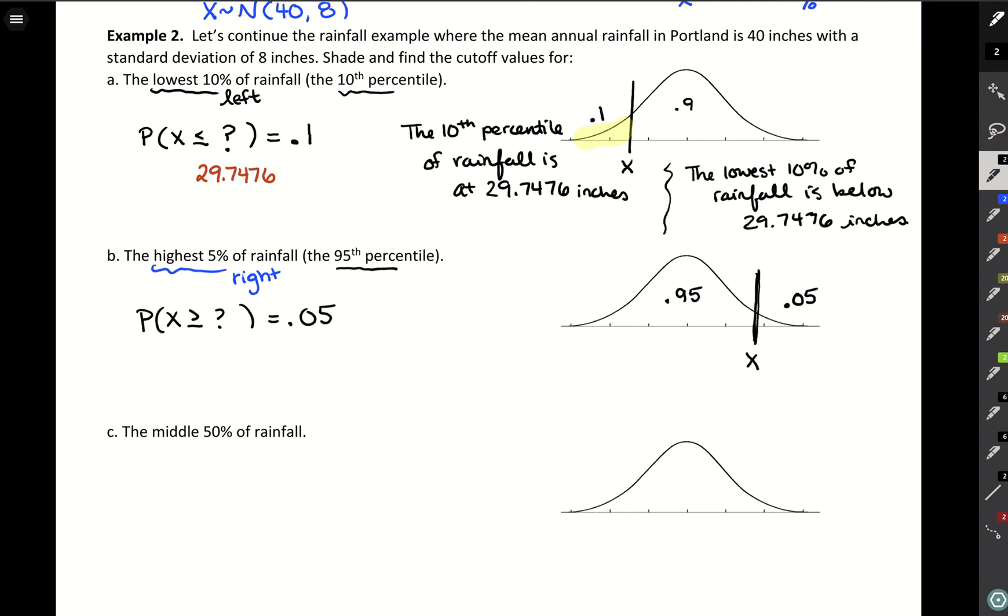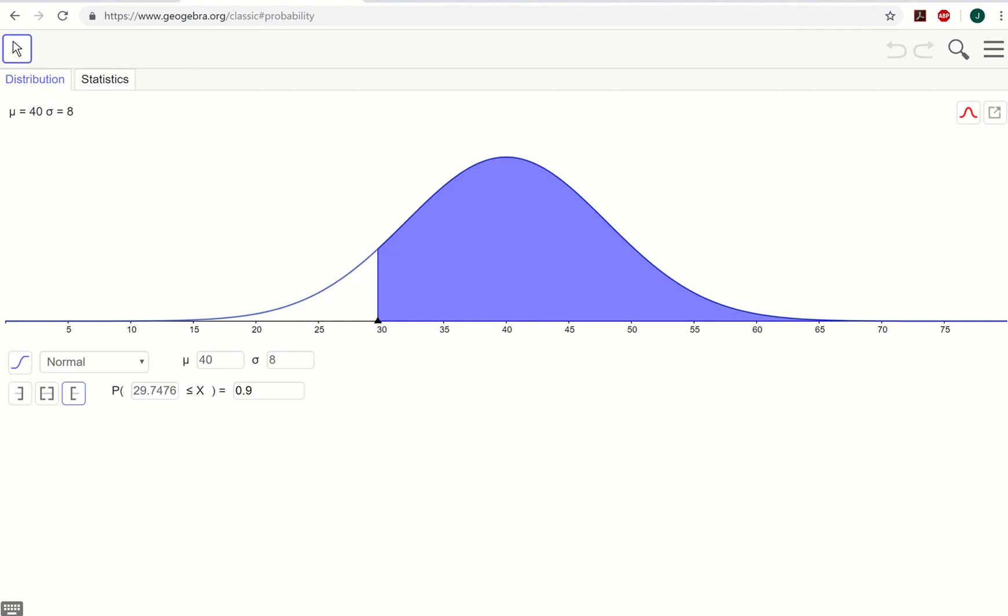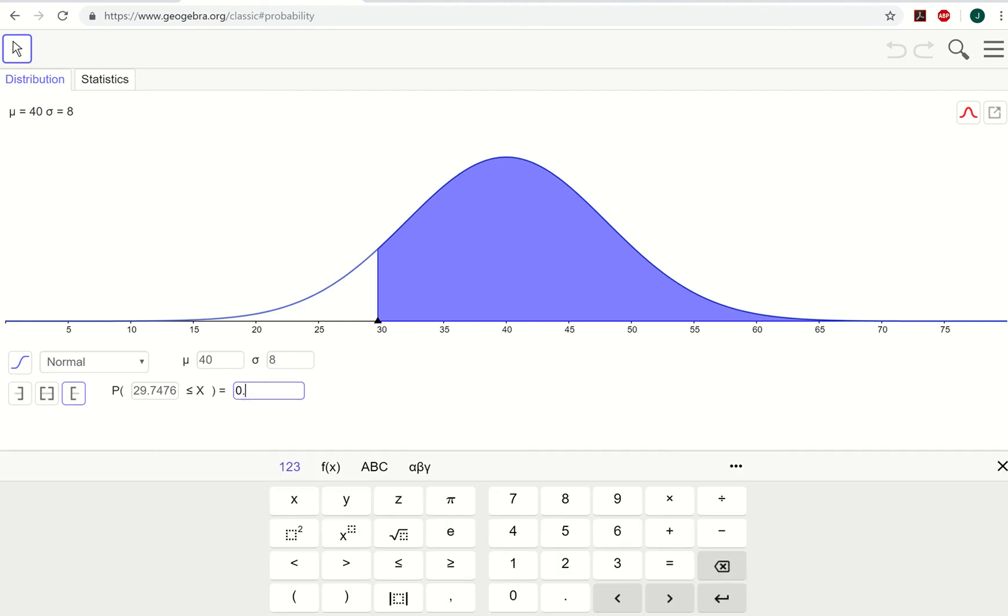So to get that number out in GeoGebra, what we need to do is switch our direction so we're going to the right hand side now, and then we need to edit that area so that it's five percent, and that gives a 53.1588.